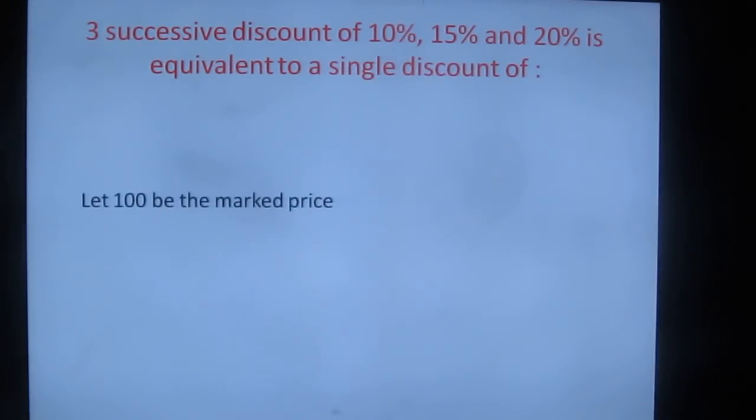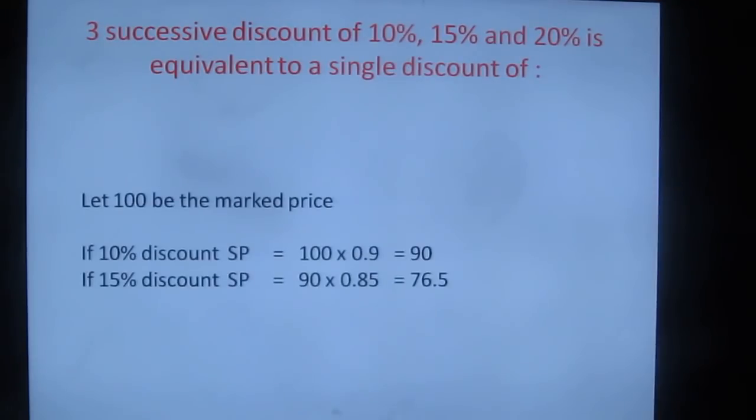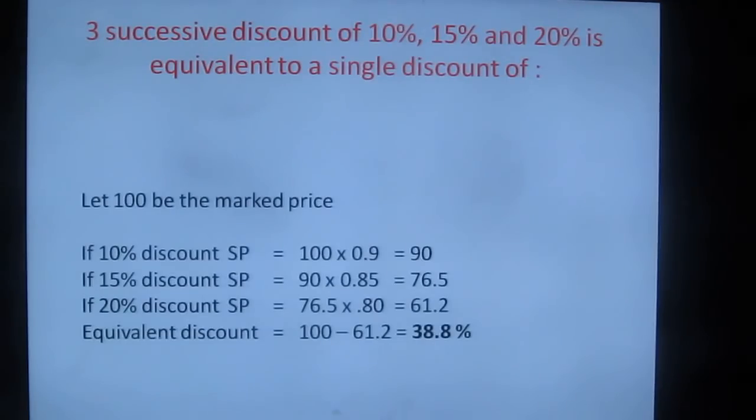Now what is the answer? Let the marked price be 100. So just multiply 100 into 0.9 multiplied by 0.85 and then multiplied by 0.8. So the final answer you will get is 61.2, but 61.2 is the final price. 100 minus 61.2 is the single discount. What is 100 minus 61.2? 38.8%. What is the other way to do it? Just add all the values: 10 plus 15 plus 20, it will be 45%. So single discount will be less than this, so check out options which are less than 45%.